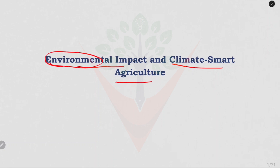Cutting the trees for farming reduces the forest, leading to deforestation, and it also harms wildlife and increases the carbon dioxide in the air. The overuse of land leads to soil erosion, loss of nutrients, and also desertification.